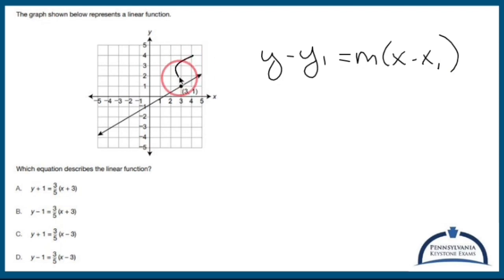Well, a point that it goes through is going to be x sub 1, y sub 1. Alright, so I have x sub 1 is going to be 3 and y sub 1 is going to be 1.